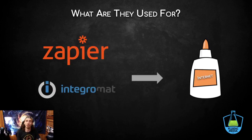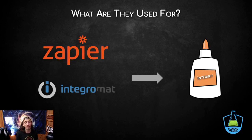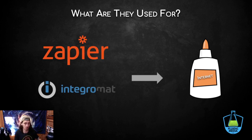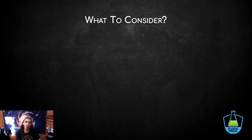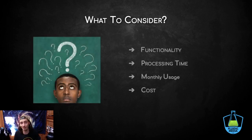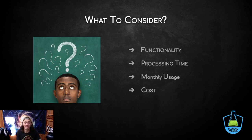The way we use that is by using these third-party softwares, Zapier and Integromat. They act like the glue of the internet — allowing us to use any sort of software system that doesn't normally natively integrate with our software of choice. For instance, a project management tool like Notion, ClickUp, or Monday.com can sync all our contacts whenever a deal gets closed. We have four things to consider: functionality, processing time, monthly usage, and cost.